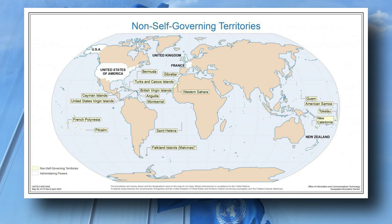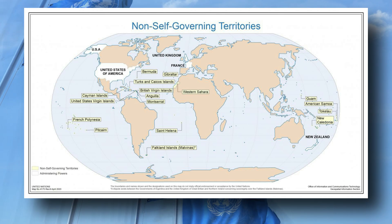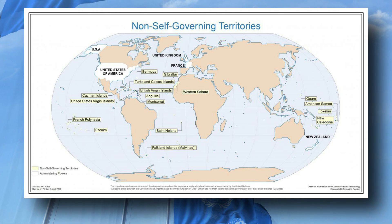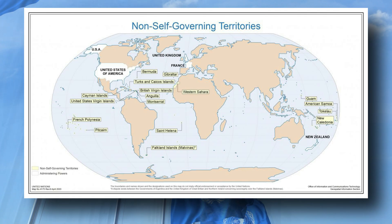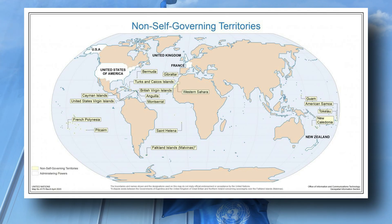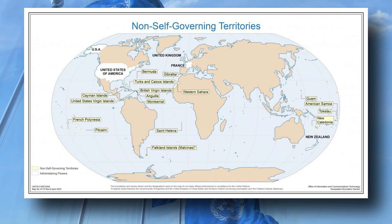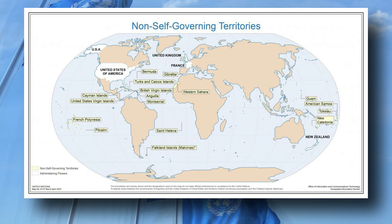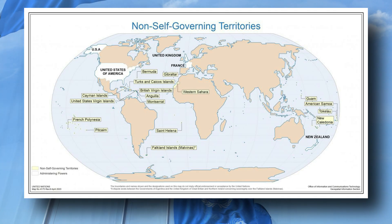Throughout history, we can see plenty of examples of people who fought for their independence, whether by force or through peaceful protest. India and the United States are just two great examples. Today, the United Nations identifies 17 places in the world that it categorizes as non-self-governing territories. However, this list does not include uninhabited areas or places that have a high degree of autonomy, such as the United States and Puerto Rico.